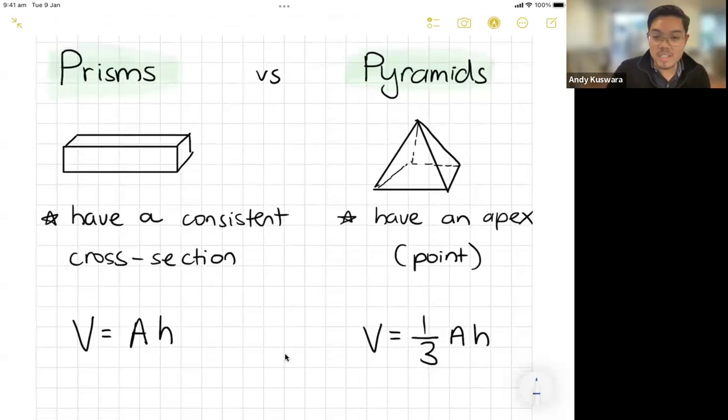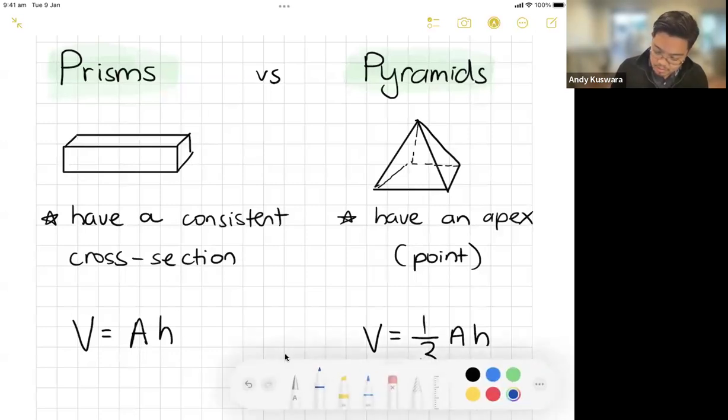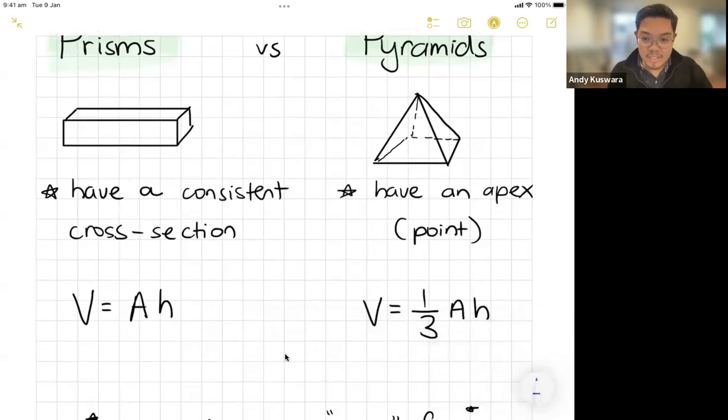They have two different formulas. The only one that is given to you is the one on the right here, V equals one-third Ah.